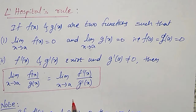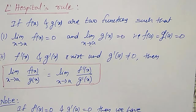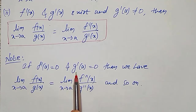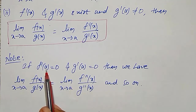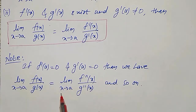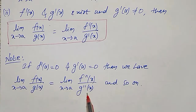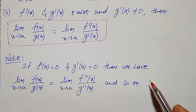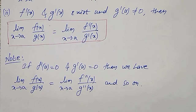This same rule can be extended to second order as well. If f′(a) = 0 and g′(a) = 0, then we can write: limit as x tends to a of f(x)/g(x) = limit as x tends to a of f″(x)/g″(x). And again if f″(a) = 0 and g″(a) = 0, we can extend it further to the next derivative, and so on.